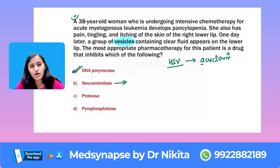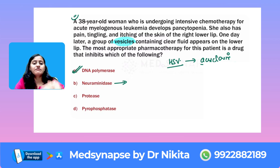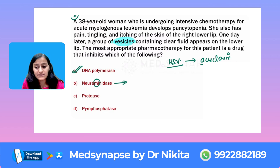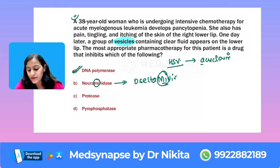Which drug targets neuraminidase? HSV1 affects above the waist, HSV2 affects below the waist. The neuraminidase inhibitor drugs are oseltamivir and zanamivir. Remember oseltamivir — that is the neuraminidase inhibitor drug. Clear with everyone?